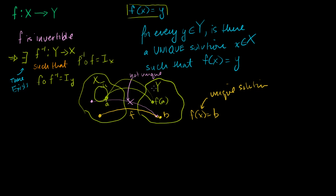So if you start in Y and you apply the inverse and then apply the function to that, you end up back in Y at that same point — that's equivalent to just applying the identity function. And the composition of f with the inverse function is equal to the identity function on Y. This is what invertibility tells me; this is how I defined invertibility in the last video. Now we're concerned with the equation f of x is equal to y, and we want to know for any y whether there is a unique x solution.